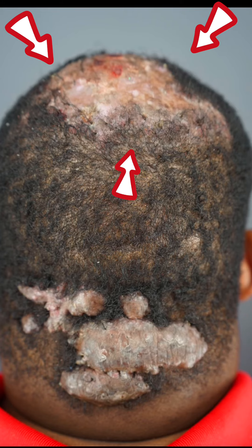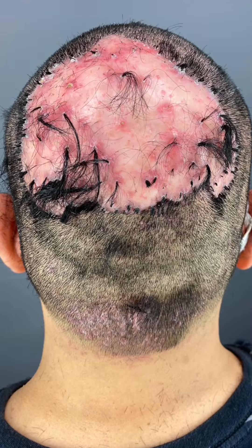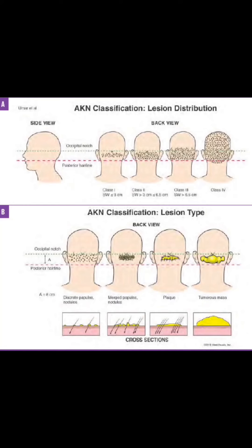First, they are often distributed in the crown area and the top of the head. Second, they are typically plaques or masses. Folliculitis deKalvans lesions on the crown or top of the head — this concludes how to classify AKN.